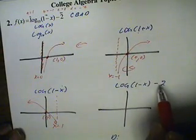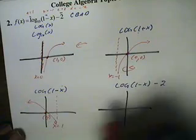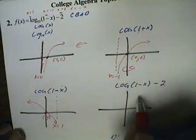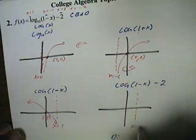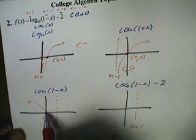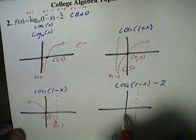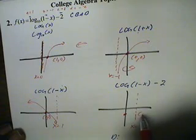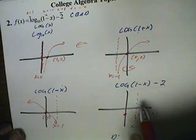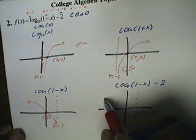Okay, finally, minus 2. Everything goes down two times. If you lower the asymptote down twice, it remains x equals 1. If you lower the point (0, 0) down twice, it now becomes (0, negative 2). And the graph remains here.